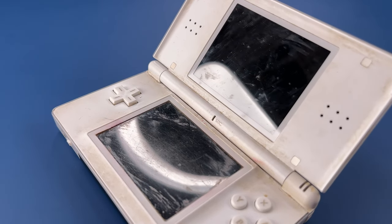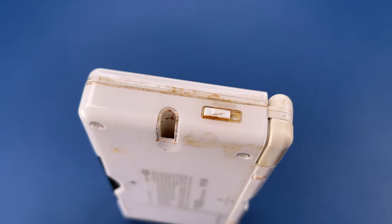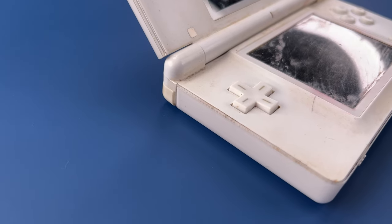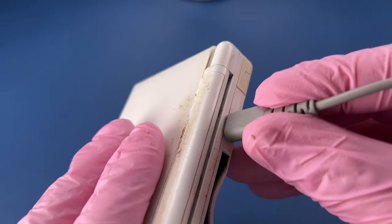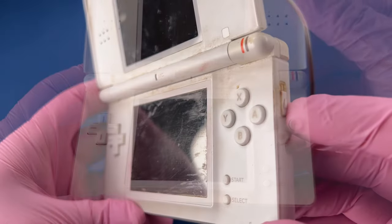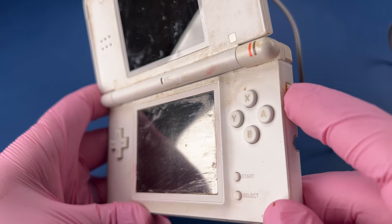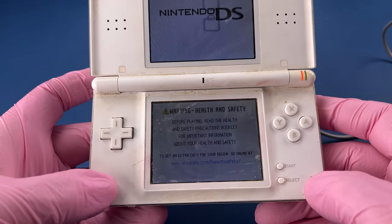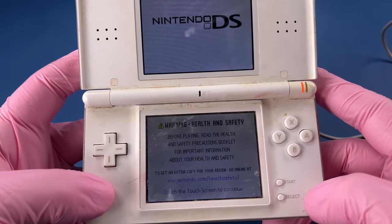We have a polar white DS Lite to clean today. Let's see if it works first. This power button is really slow and sticky - something was spilled that got stuck right there.